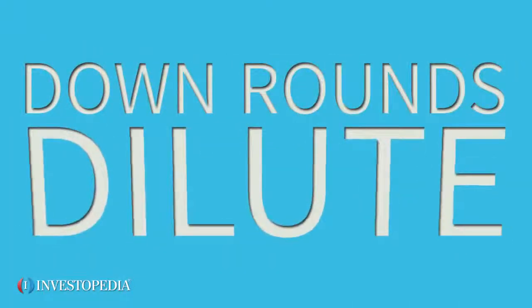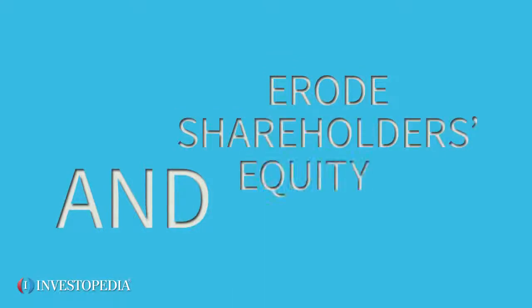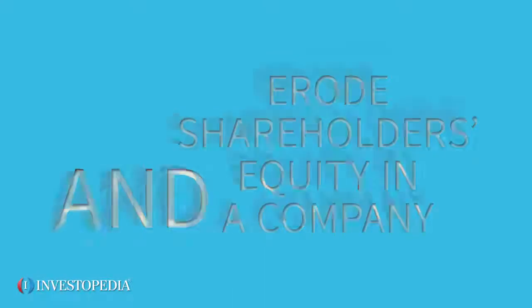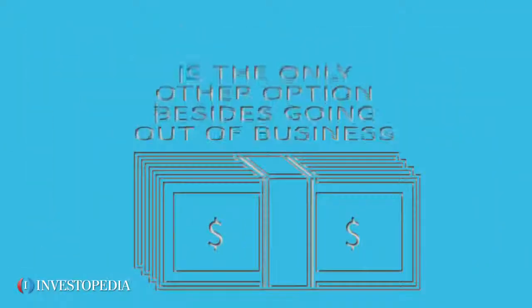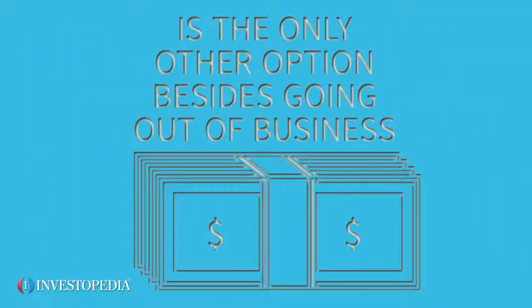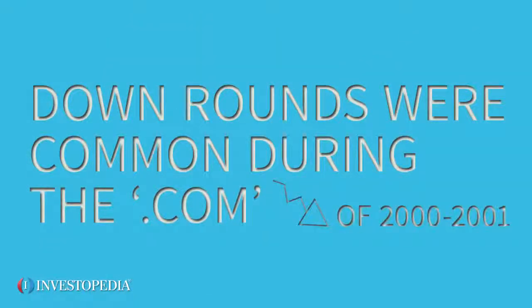Down rounds dilute existing share values and erode shareholders' equity in a company. But often a down round of financing is the only other option besides going out of business. Down rounds were common during the dot-com crash of 2000-2001.